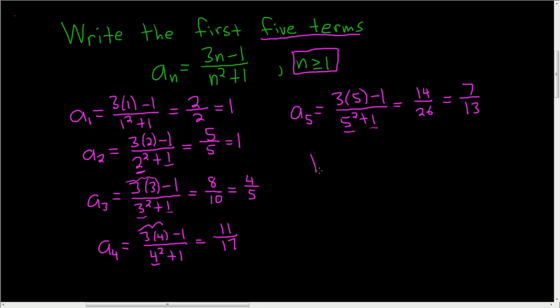And so the final answer is 1, 1, 4 fifths, 11 over 17, and 7 over 13. So those are the first 5 terms.